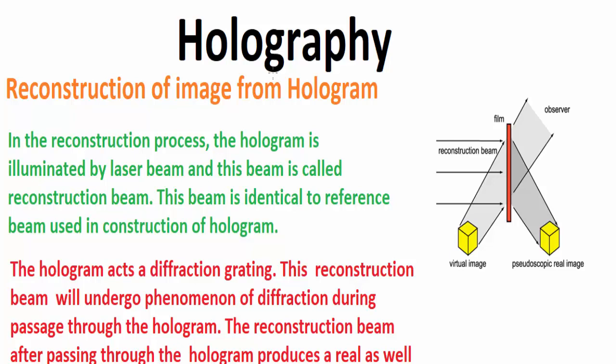The hologram is illuminated by a coherent laser beam, usually the same wavelength as the original laser beam. This is known as the reconstructive wave or beam. When this reconstructive beam falls on the hologram film, it interacts with the interference pattern recorded on it.